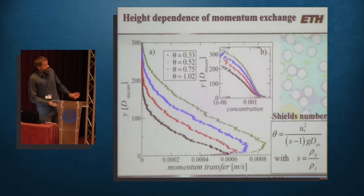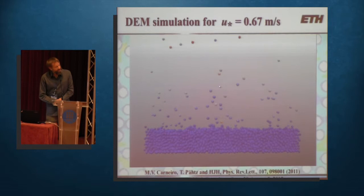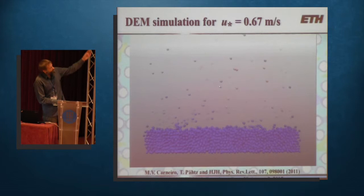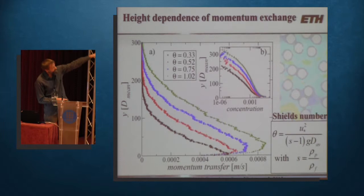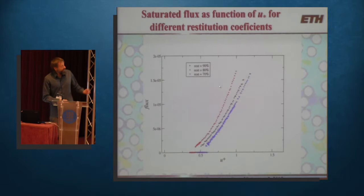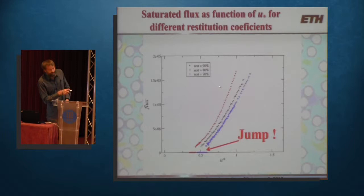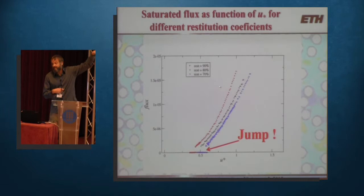Let me show you a movie. This is what you obtain from such a simulation in three dimensions. You can follow the splashes in detail and see some particles fly much higher. You can obtain the subtraction of momentum at each height — how much momentum is given to the particles at each position. Looking again at the saturated flux as a function of wind velocity, at this point you don't only find a threshold, but you also find that there is a jump at the threshold. Later, this jump was also verified experimentally.